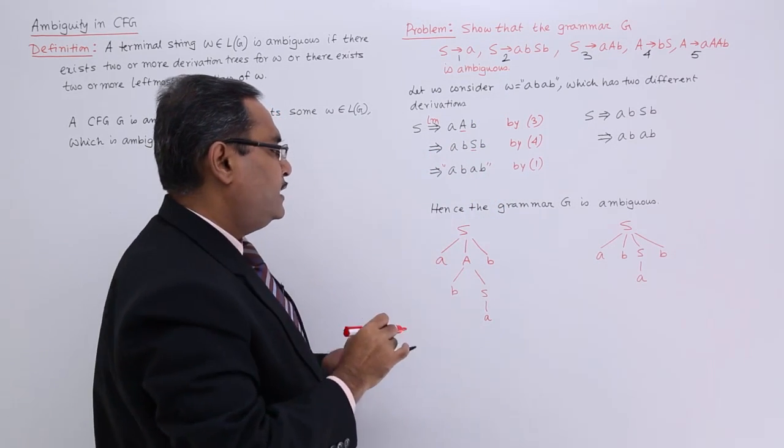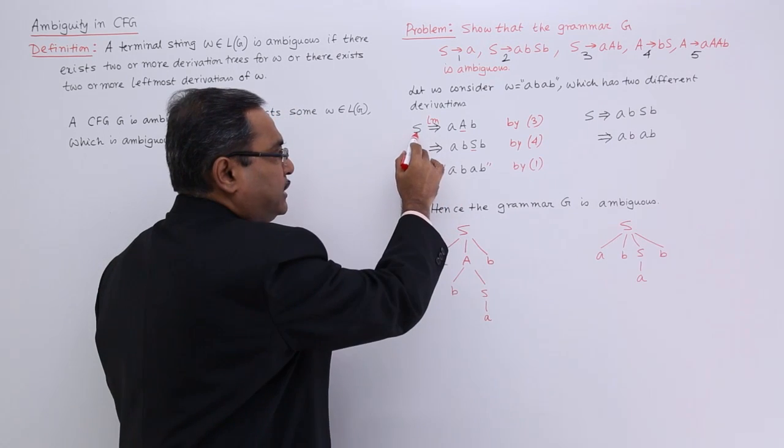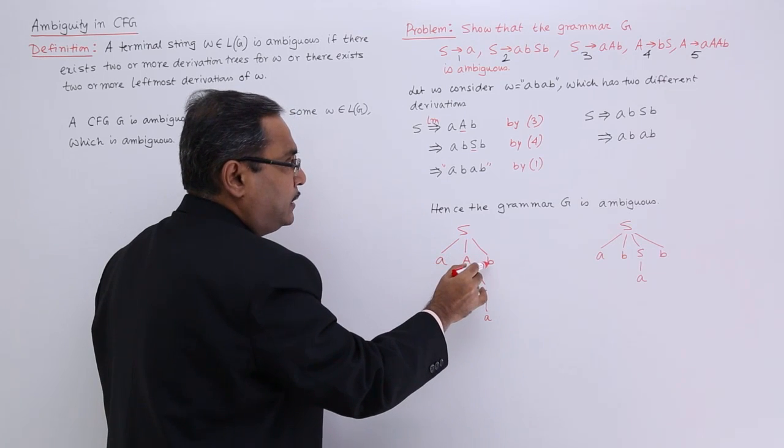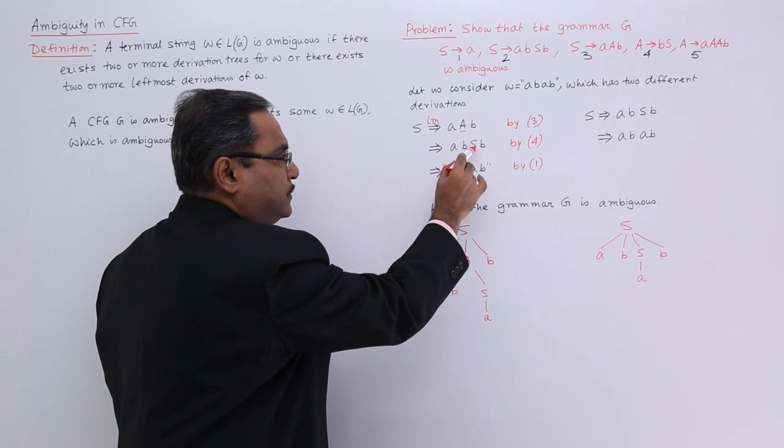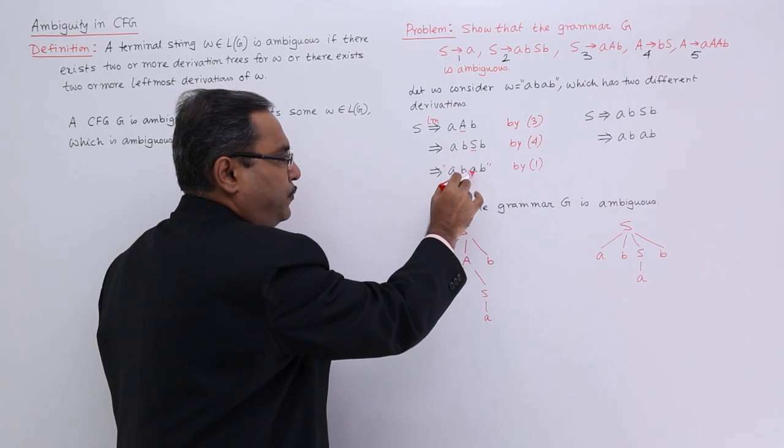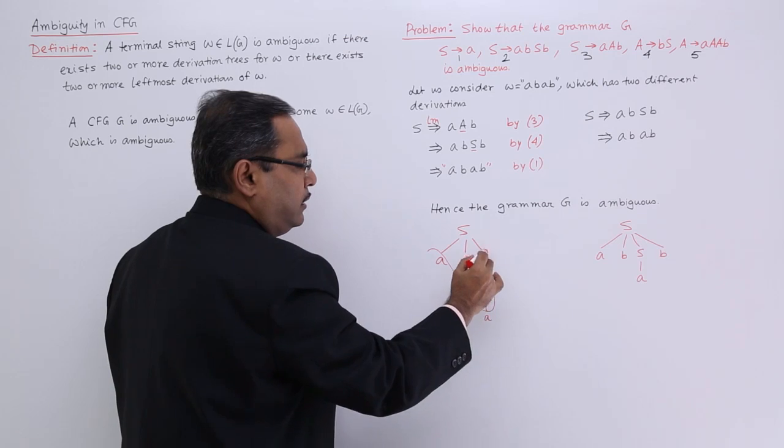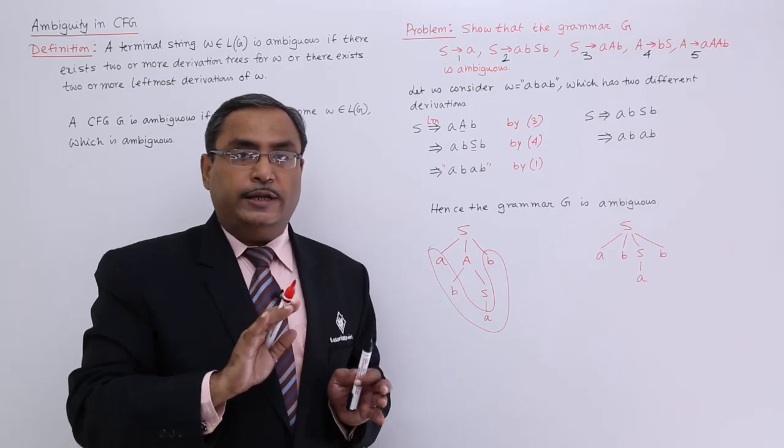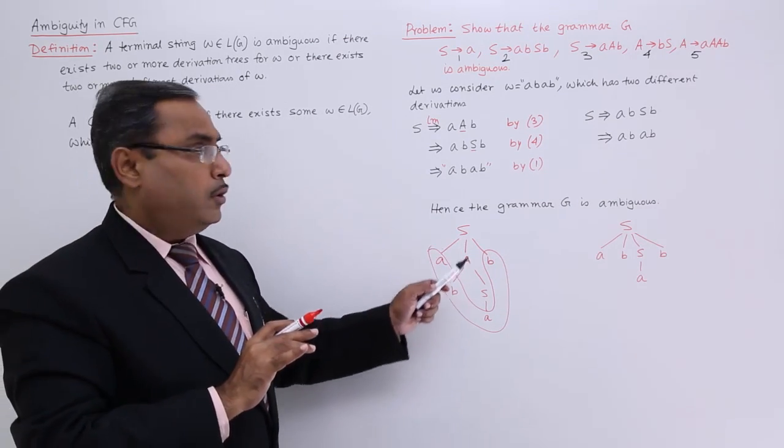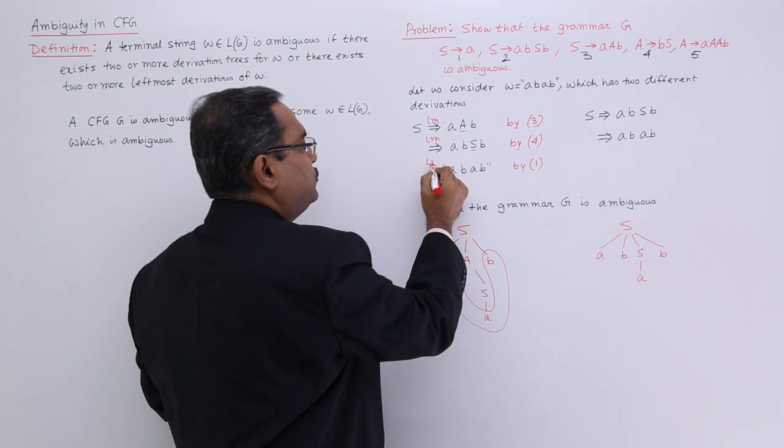So if you do the respective derivation tree, here it will be: S produces aAB, this A produces bS, and this S will produce a. So if you go for the yield you are getting abab. That is my this part. Now please come to this, and here each and every case I have used leftmost derivation.